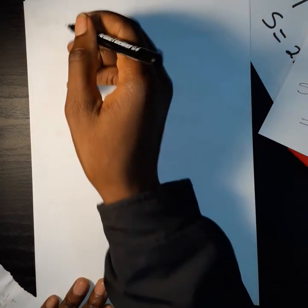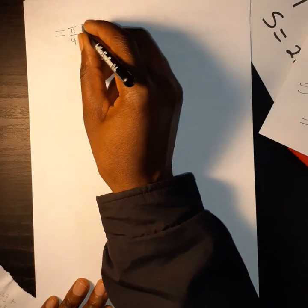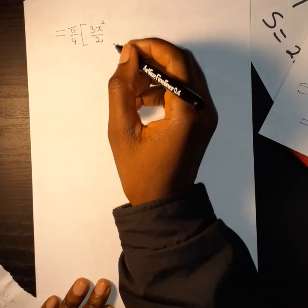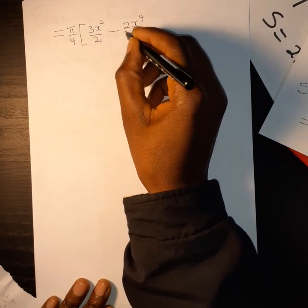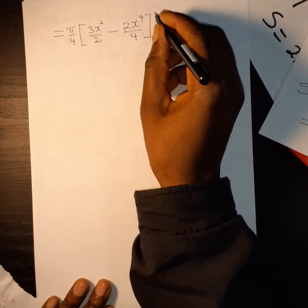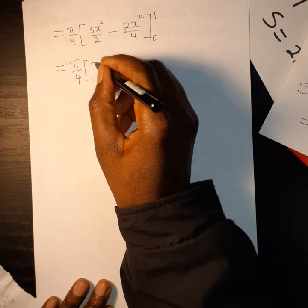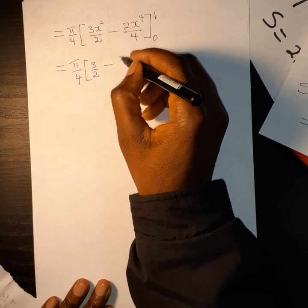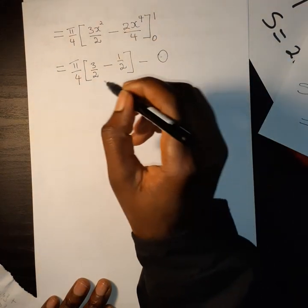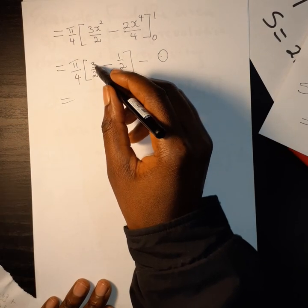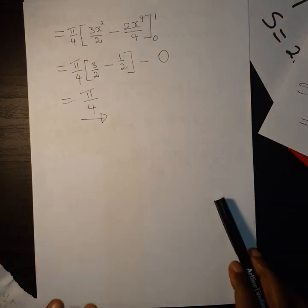Integrating with respect to x, we get π over 4 times 3x squared over 2 minus 2x to the power of 4 over 4, evaluated from 0 to 1. Substituting 1 gives 3 over 2 minus 1 over 2, which equals 1; substituting 0 gives 0. So the answer is π over 4 square units.